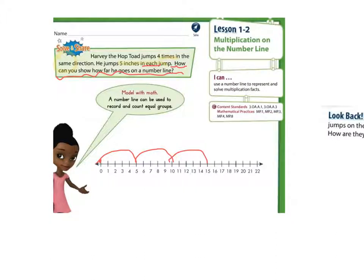And another five. Three jumps. And five more. There's four jumps. What number did he land on? Twenty.